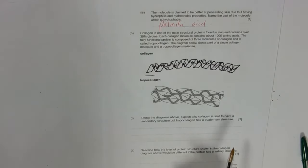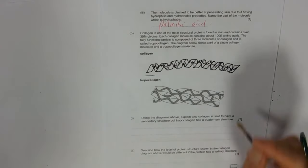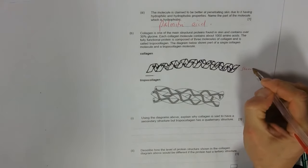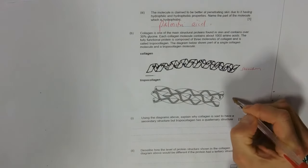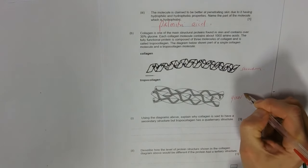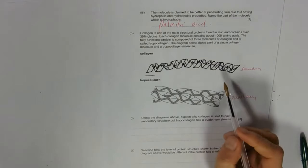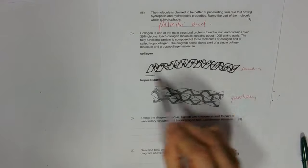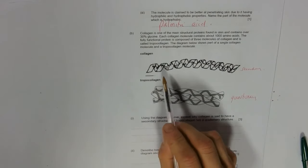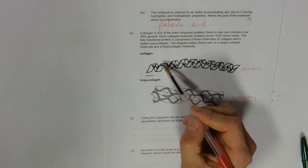Using the diagrams above, explain why collagen is said to have a secondary structure - that one is secondary - and this one has quaternary structure. Well, secondary, what do you remember? The secondary - they've got the chain of amino acids coiled into an alpha helix.